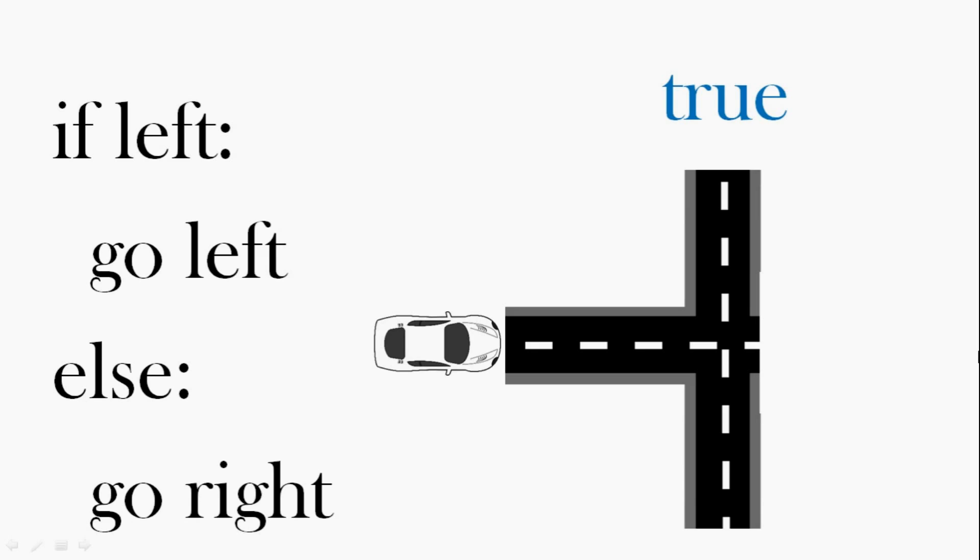So in this example, we've got if left, go left, else go right. We've only got two options: go left or right. So if it's true, the car will go left. If it's false, the car will not go left, and the other option is to go right. The car goes right.